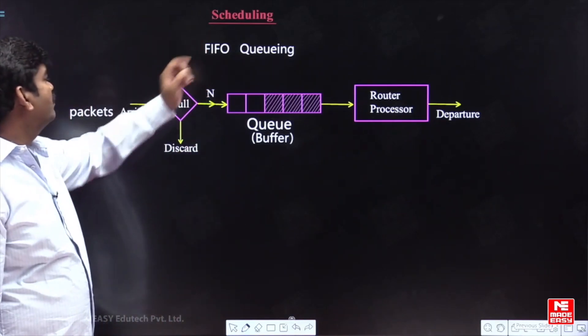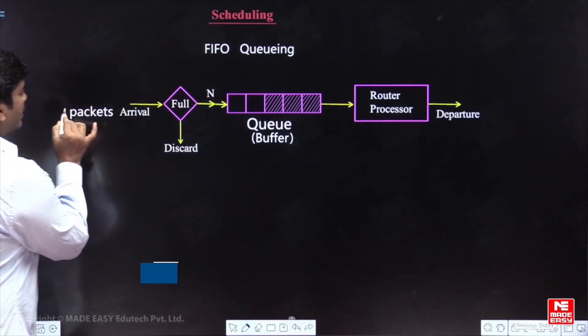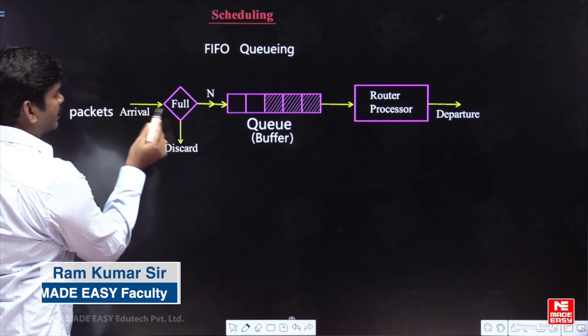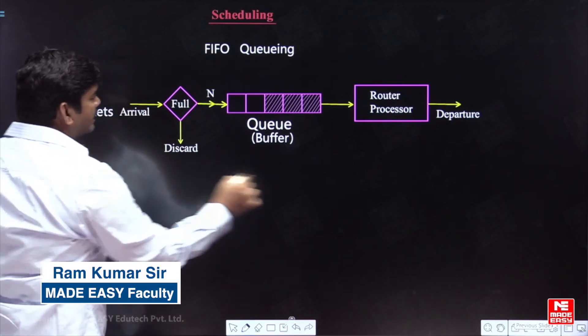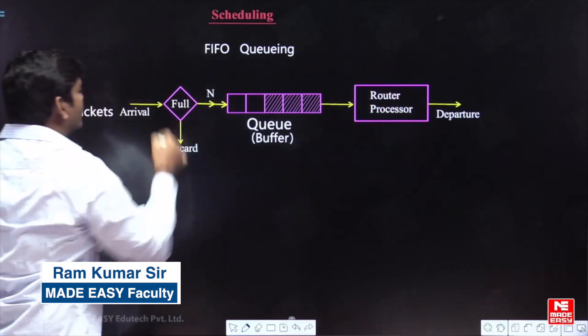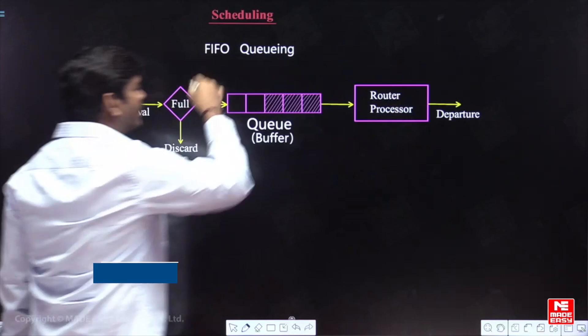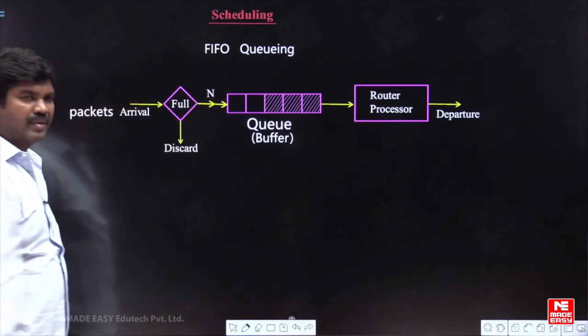This is the scheduling, FIFO queuing. The packets are coming to this particular route — this entire diagram you can call it as the router hardware circuit.